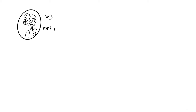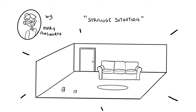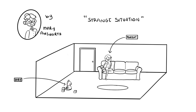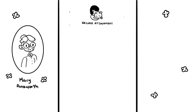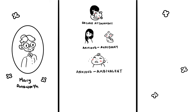A study done by Mary Ainsworth called the Strange Situation put a parent and a child between the ages of 9 to 18 months in a room. She would then bring in a stranger, and while the child was preoccupied with the stranger, the parent would leave. Afterwards, the child would react to the missing parent, and the parent would come back. Ainsworth identified three types of attachment: secure, anxious-avoidant, and anxious-ambivalent attachment.